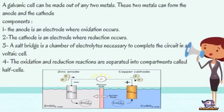Component three: the salt bridge is a chamber of electrolytes necessary to complete the circuit in a voltaic cell. Component four: the oxidation and reduction reactions are separated into compartments called half-cells.